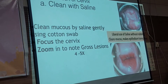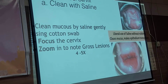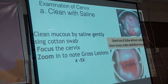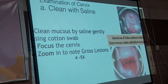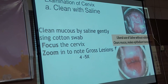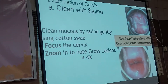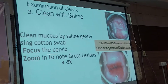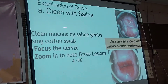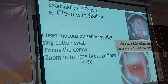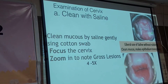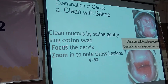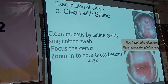Once we have focused the cervix, clean it with saline — 0.9% normal saline available in hospitals. Clean the mucus gently; do not rub, as rubbing displaces superficial cells and may cause bleeding. Use swabs with plenty of saline and focus the cervix with the colposcope at 4x or 5x magnification, which is good enough for identifying gross lesions.